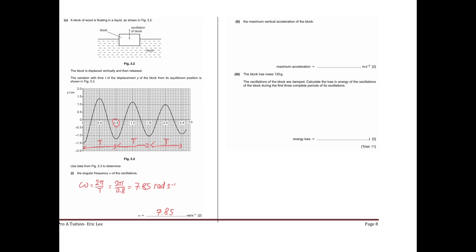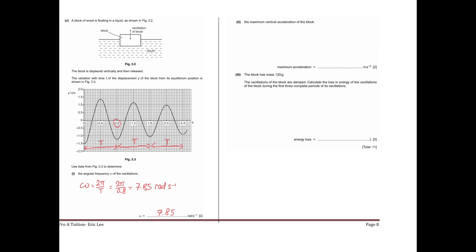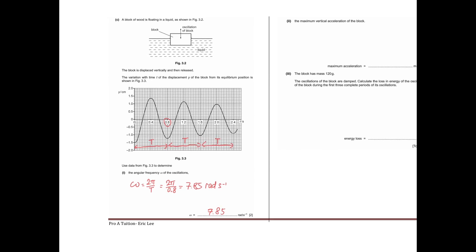Now part 2: the maximum vertical acceleration of the block. The formula is a equals minus omega squared x. If you want the acceleration to be maximum, then x must also be at its maximum value. So maximum acceleration corresponds to maximum displacement.